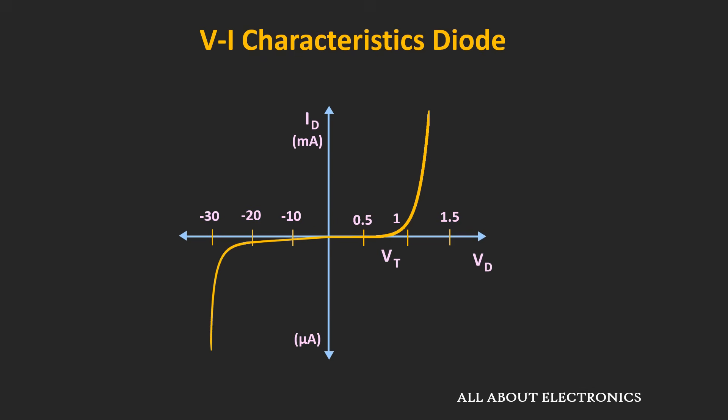Using this VI characteristic of the diode, we can easily find the voltage and current flowing through the diode and analyze any circuit which contains diodes. But because of the nonlinear characteristic of the diode curve, it is a bit difficult to find these values easily. So what we can do is approximate this diode characteristic to analyze circuits more conveniently.